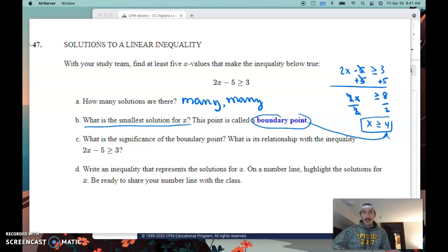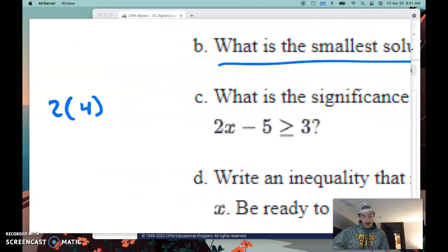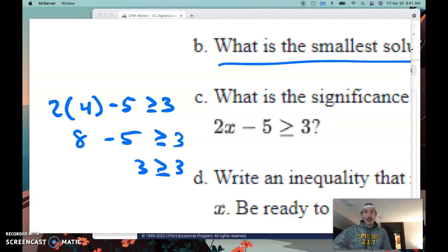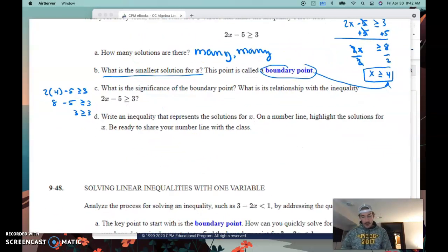It says, what is the significance of the boundary point, and what is the relationship with the inequality? We remember that that boundary point is 4. Now, watch this. If I plug that boundary point in for x, instead of x there I put in the 4. 2 times 4 is 8, and then 8 minus 5 is 3. This happens to be the smallest value that in this inequality makes it true. Is 3 greater than or equal to 3? Absolutely. It satisfies the equal to portion. It also happens to identify the first value that would make it not true if it was just a greater than symbol.